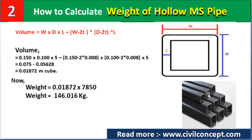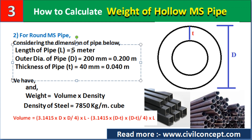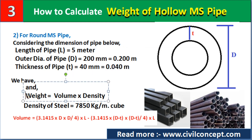Now for part two, we will calculate the weight of a round MS pipe. Considering: length of pipe is 5 meters, outer diameter is 200 mm (0.200 m), and thickness of pipe is 40 mm (0.040 m).